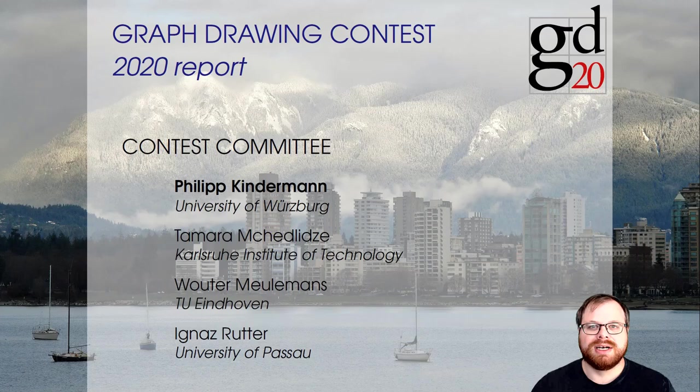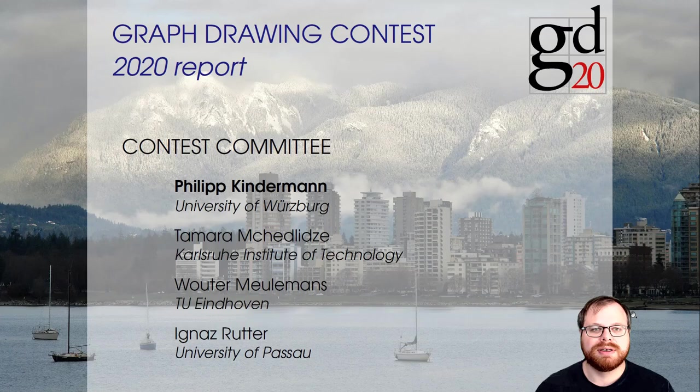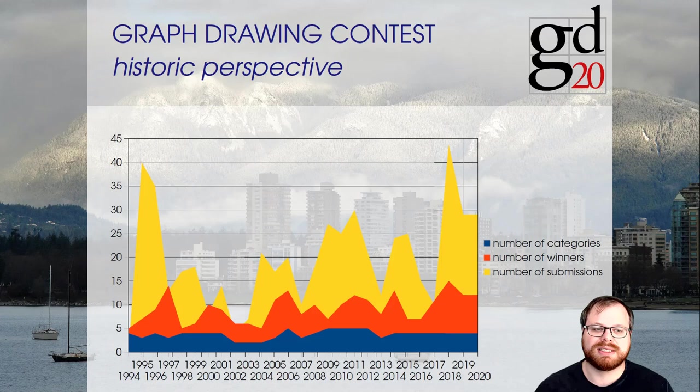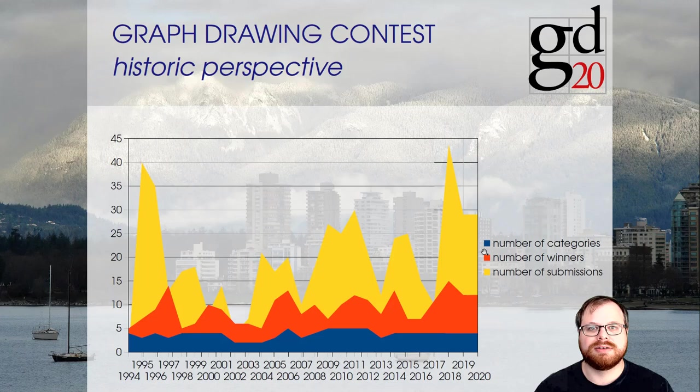Welcome to the 2020 Graph Drawing Contest Report. I'm Philipp Kindermann, the chair of the Contest Committee, which also consists of Tamara Mechelt-Lietze, Walter Mölemanns and Igna Zutter. For a brief historic perspective, this is the 27th installment — it exists since 1994. Since 2014 the number of categories has always been constant at 4, and this year we had exactly the same number of winners and submissions as last year, which was the first time that ever happened.